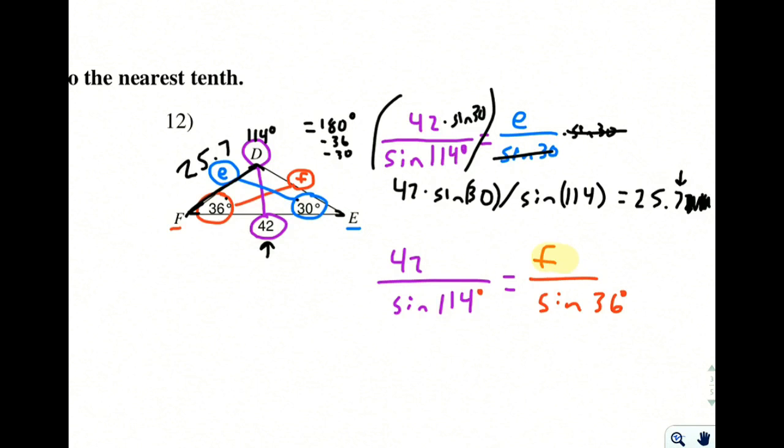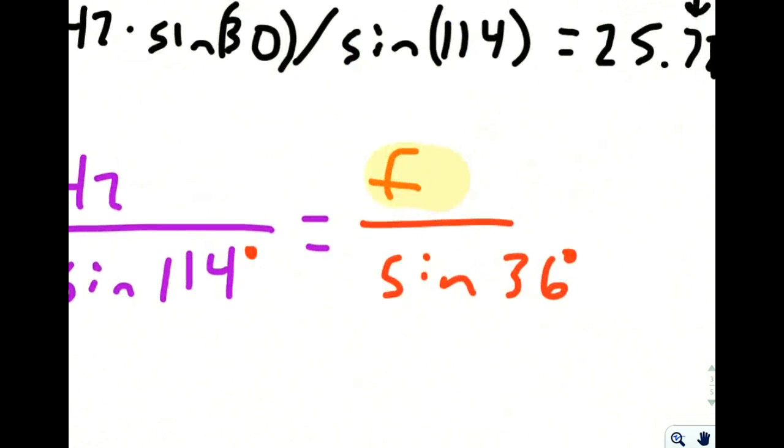Again, our goal is to get the side length F alone. So we're going to multiply both sides by the thing that we have on the bottoms. If you're wondering why we're not taking an inverse sine,